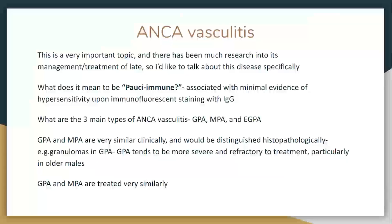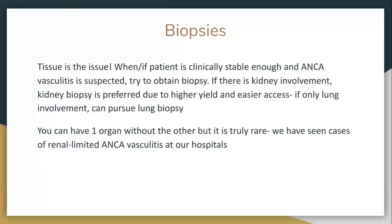What are the three main ANCA vasculitides? MPA — microscopic polyangiitis — is usually a little more benign than Wegener's. Wegener's tends to be more aggressive, especially in terms of organ involvement. Should you worry about whether it's MPA before you treat them? The treatment is exactly the same — and you can only really distinguish them histopathologically in most cases, unless you have a very strong MPO or a very strong PR3.